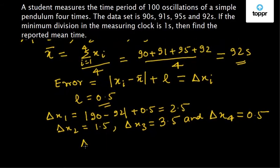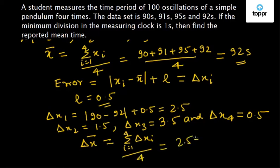So the mean of the error will be delta x-bar equal to sigma delta xi i equal to 1 to 4 by 4 equal to 2.5 plus 1.5 plus 3.5 plus 0.5 by 4 equal to 2.